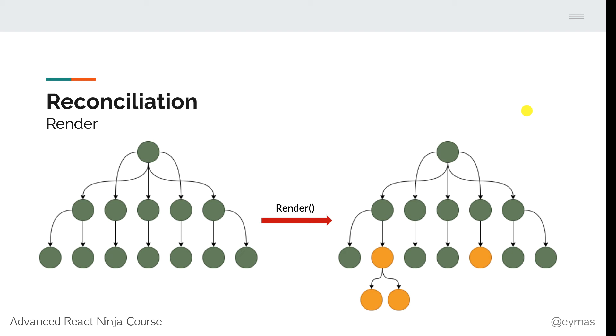These DOM changes are expensive actions, so that's why the diffing algorithm will minimize the DOM updates using this algorithm. So this is the reconciliation of React.